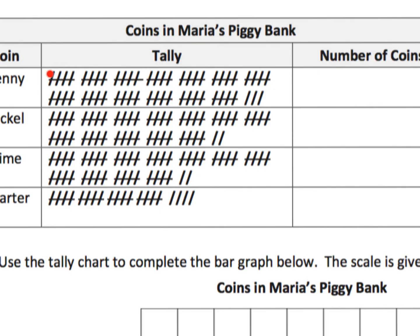We've got 5, 10, 15, 20, 25, 30, 35, 40, 45, 50, 55, 60, 65 — plus three more gives us 68.